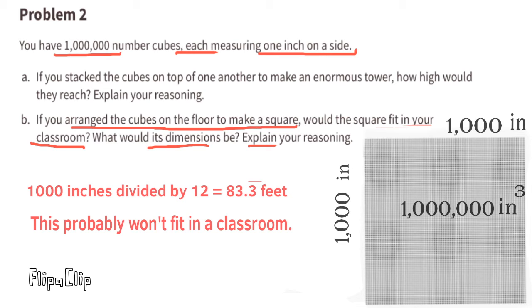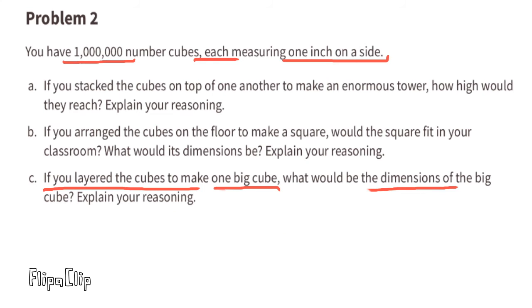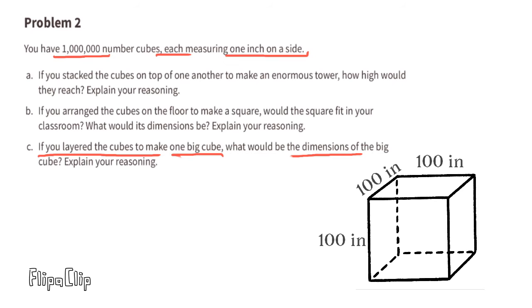A square with side lengths of 83.3 feet would be probably too big for a classroom. Part C: If you layered the cubes to make one big cube, the side lengths would be 100 inches, because 100 times 100 times 100 equals 1 million inches cubed, matching our 1 million 1-inch cubes.